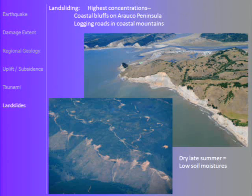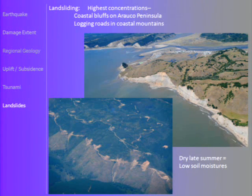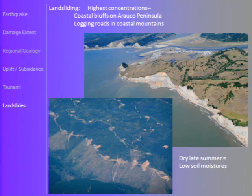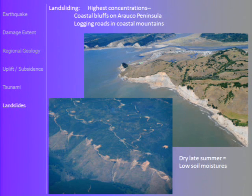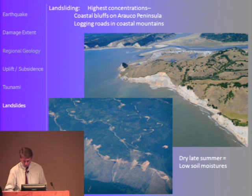One last comment on landslides, which is of common interest to geotechnical engineering: the landslides were relatively few. There was some uplift on the coastal area and some landslides, and some multiple debris flows in the area. The reason for that is probably that there were very low soil moistures during the earthquake — it was the end of summer — so there were anomalously few landslides. That's all on the geotechnical side. I'll now pass it over to Dr. John Bray with UC Berkeley.